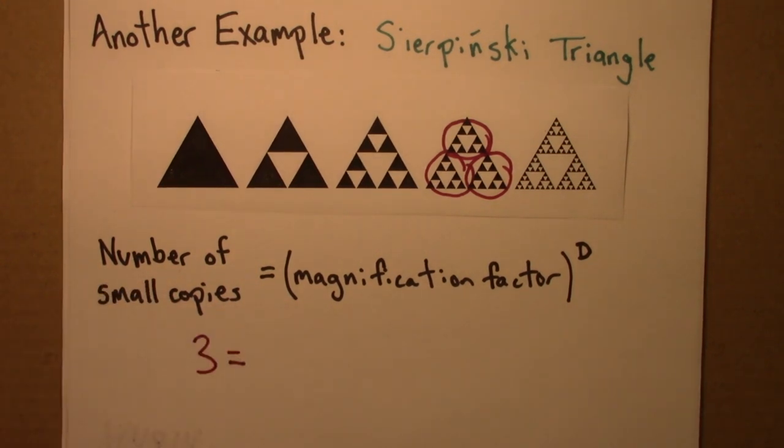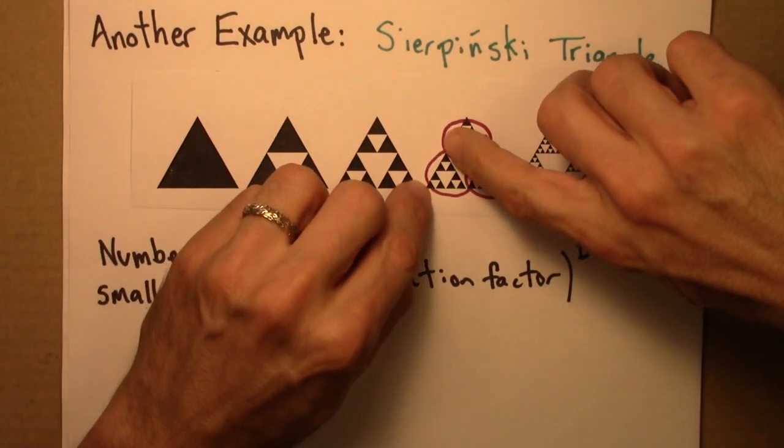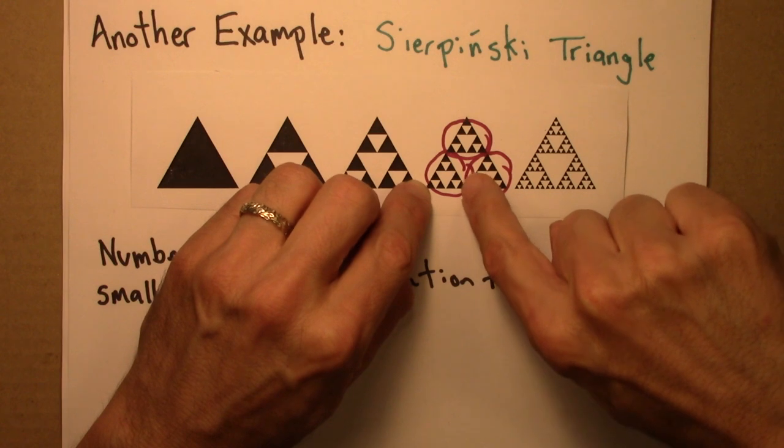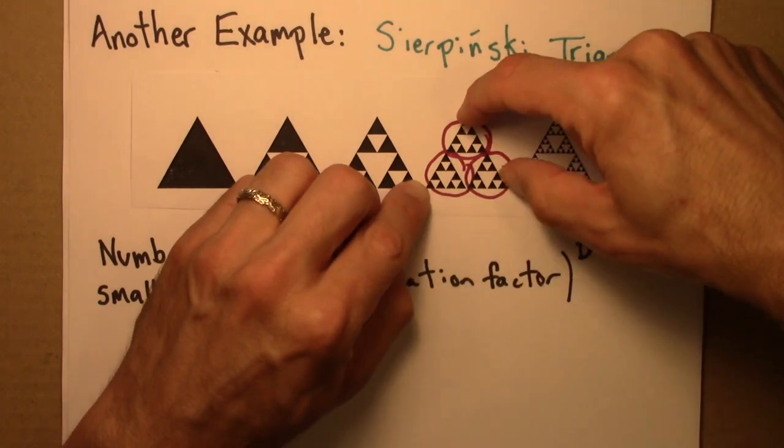The magnification factor is two. You can see that I need to take this and I need to stretch it by a factor of two this way and two this way to have the small copy be as big as the large one.